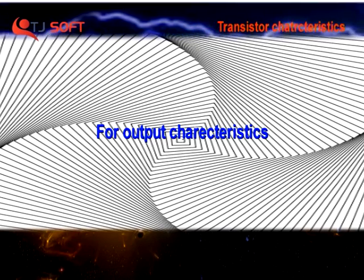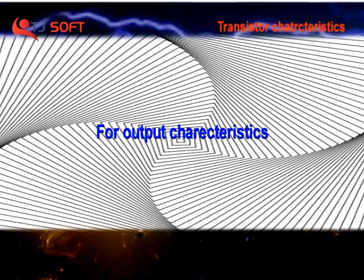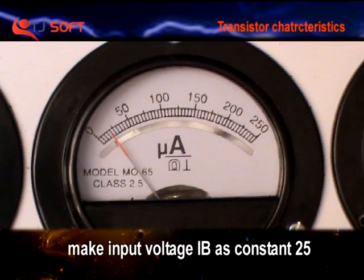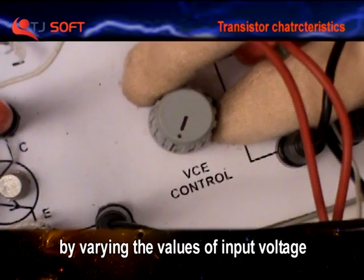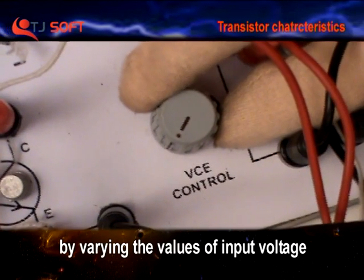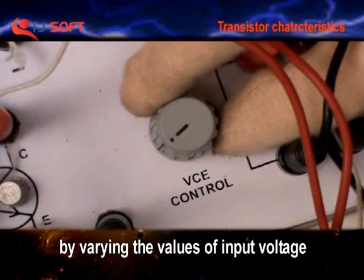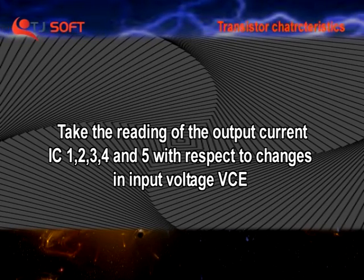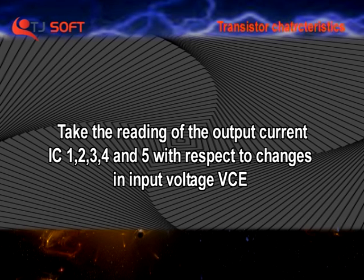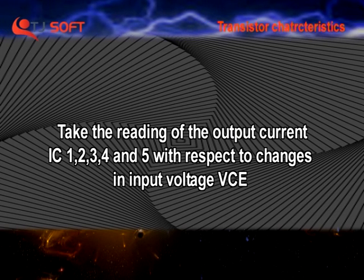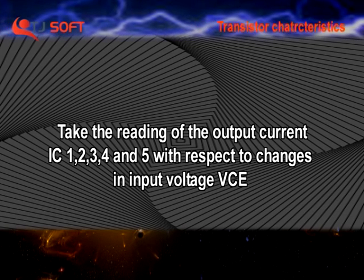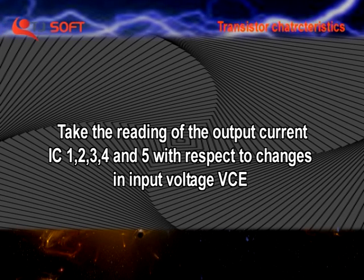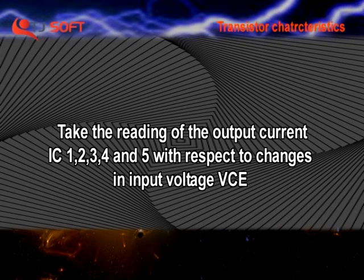For output characteristics, make the input current IB constant, i.e. 25. By varying the values of output voltage VCE as 1, 2, 3, 4, 5, take the readings of output current IC as 1, 2, 3, 4, 5 with respect to changes in input voltage VCE.